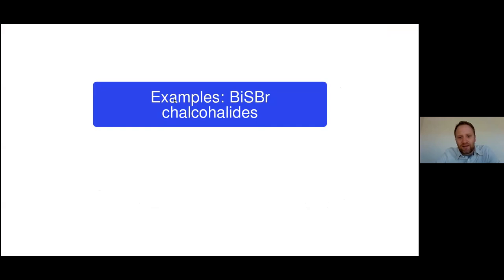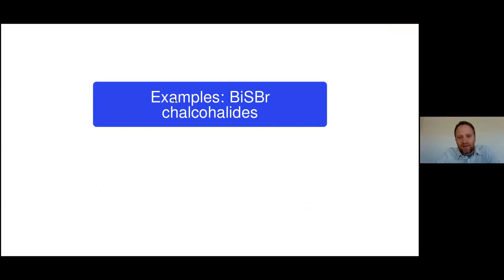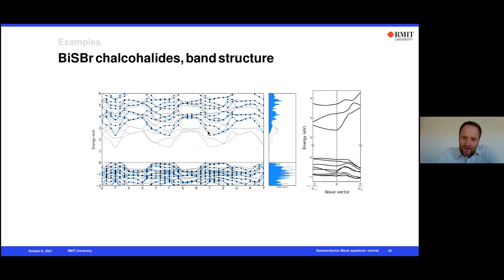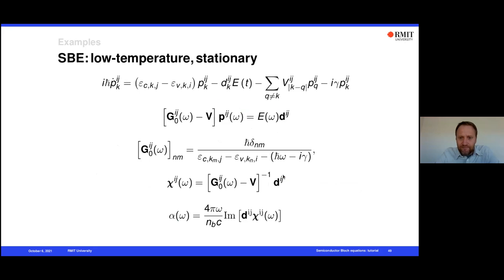Semiconductor Bloch equations have proven to work well for gallium arsenide and other III-V semiconductors. However, I want to show some limitations. Recently, we tried to apply semiconductor Bloch equations to a van der Waals material that can be seen as atomic chains coupled in two dimensions. This crystal has very anisotropic band structure — almost flat bands in two dimensions and very large dispersion in the third dimension — making it very challenging to apply semiconductor Bloch equations. I'm interested in the low temperature stationary case, so I reduce the problem to a set of linear algebraic equations via Fourier transform and invert a matrix to compute the absorption spectrum.